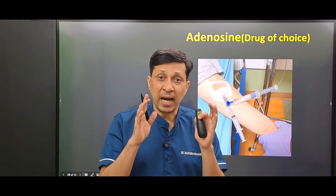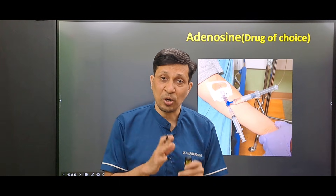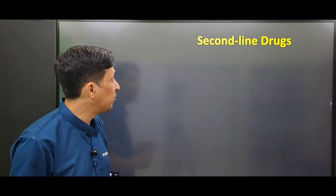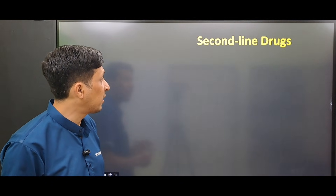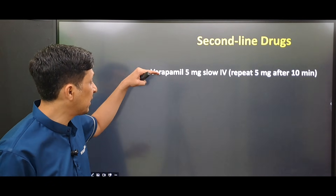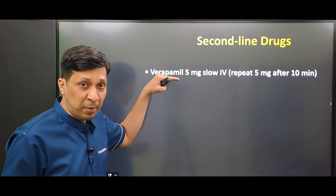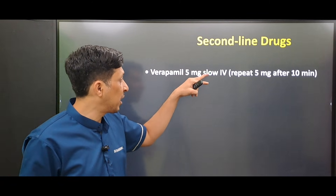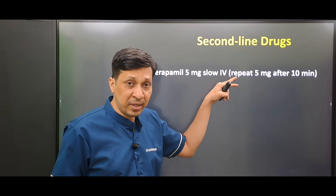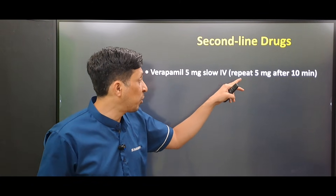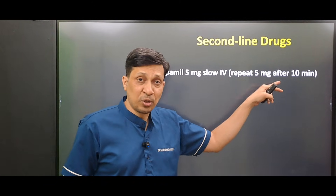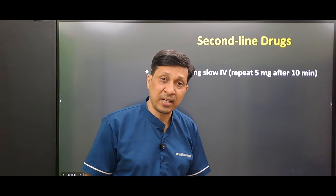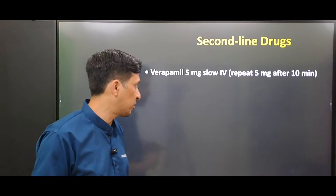If adenosine is also not effective, we go for certain second-line drugs. The first is verapamil — the dose is 5 mg slow IV, and you can repeat this dose after 10 minutes if there is no response.